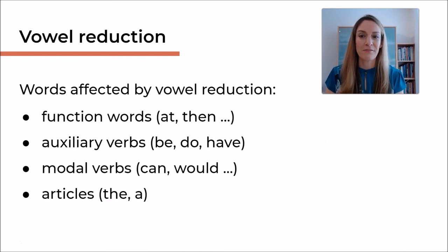Now, words affected by vowel reduction are usually function words—at, then, etc. Also, auxiliary verbs in their different conjugations and forms. So remember, we only have three auxiliary verbs in English and that is be, do and have. And of course, there are a lot of different conjugations because they are irregular. And some of these forms will experience vowel reduction. Modal verbs like CAN and WOULD often experience vowel reduction and also articles like THE or A.